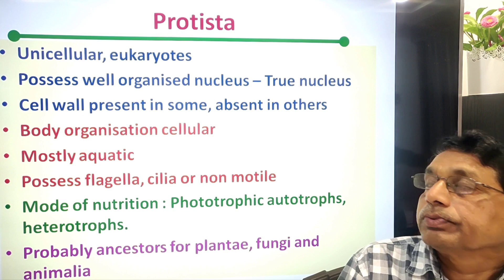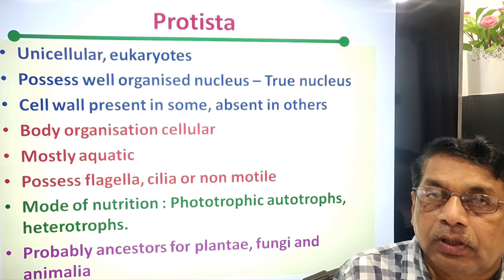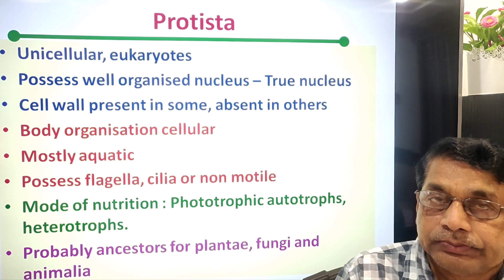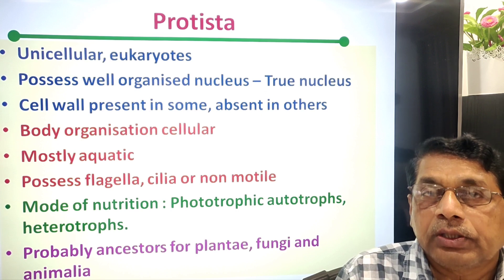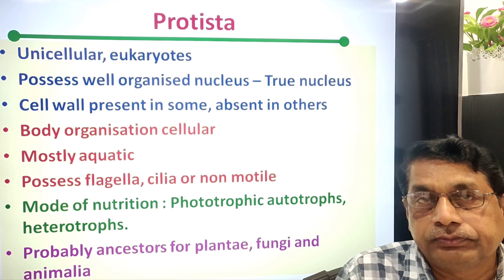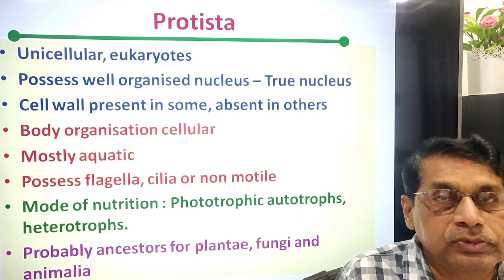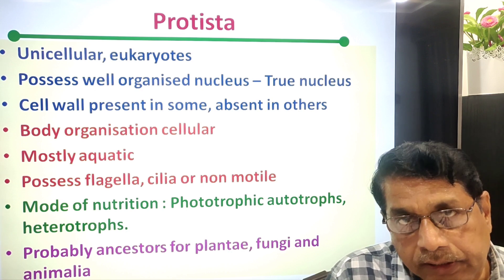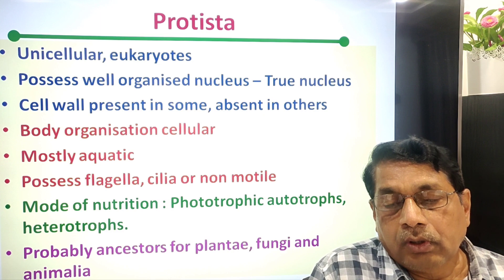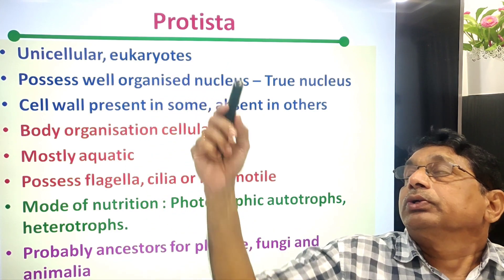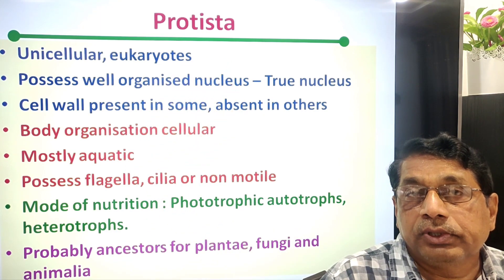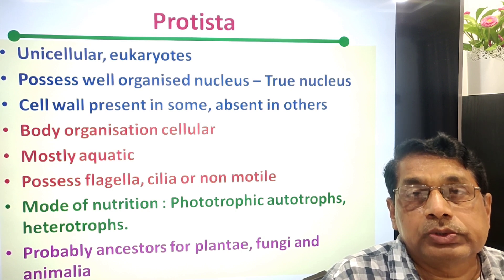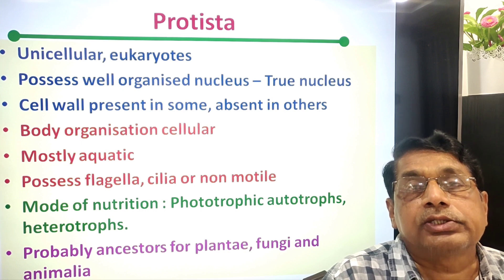In today's lecture class, let us try to understand Protista, another kingdom proposed by Whittaker. We know five kingdoms: Monera, Protista, Plant Kingdom, Animal Kingdom, and Mycetae (Fungal Kingdom). In this class we try to understand what are the characteristic features of Protista, what are the different groups and their characteristic features.